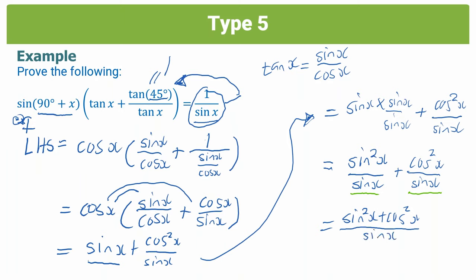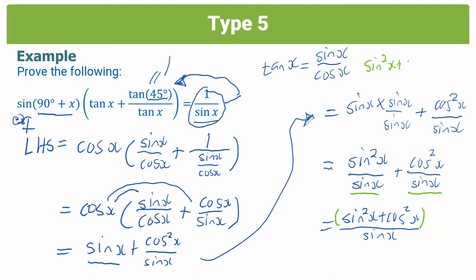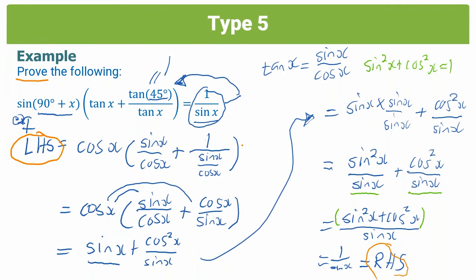That becomes sine squared x plus cos squared x all over sine x. In the numerator we have sine squared x plus cos squared x, and from our Pythagorean identity that equals 1. So we replace the numerator with 1, giving us 1 over sine x — which is the same as our right-hand side. So we say that equals the RHS, and we've proved that the left-hand side is equal to the right-hand side.